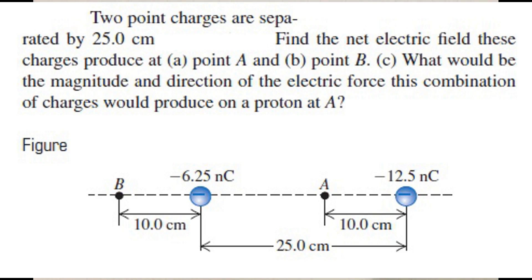Two point charges are separated by 25 cm. Find the net electric field these charges produce at point A and point B. Part C is: what would be the magnitude and direction of the electric force this combination of charges would produce on a proton at A?